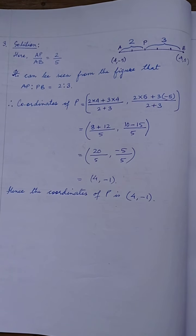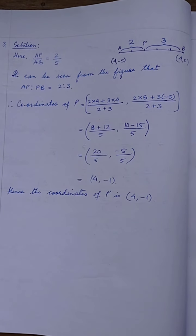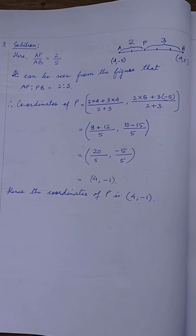To apply this method I've selected question number 3. The question says: the line segment joining the points A(4, -5) and B(4, 5) is divided by point P such that AP/AB = 2/5. Find the coordinates of P.